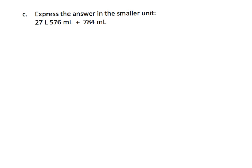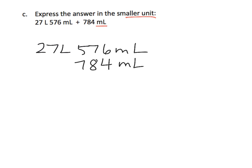Now we're going to be practicing that concept and adding, and we want to express the answer in the smallest unit. The smallest unit means milliliters, because milliliters are smaller than liters. I'm just going to show you one way to solve it. We start with 27 liters, 576 milliliters, and we're going to add in 784 milliliters. The idea is you can only add like units — you cannot take these 784 milliliters and add them to 27 directly. You have to have like units, so milliliters.